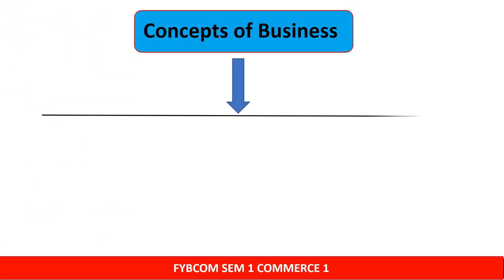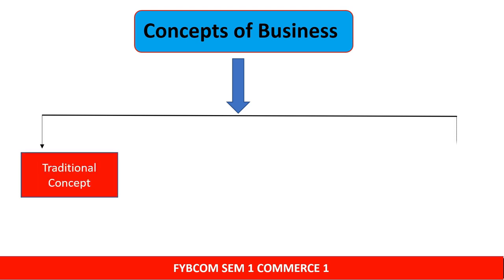So let's start with today's topics. The concept of business has been divided into two parts. Number one is the traditional concept. Traditional means a concept that has been followed since before — an orthodox concept where no major changes were made, and profit maximization was taken as the major objective of every business. The organization used to focus primarily on profit maximization under the traditional concept.